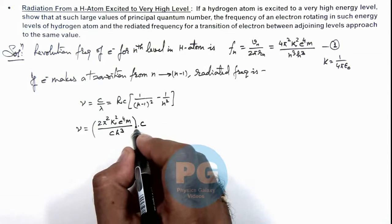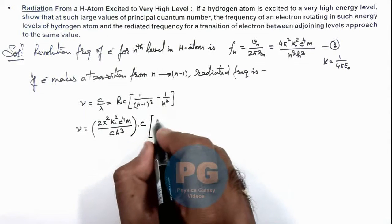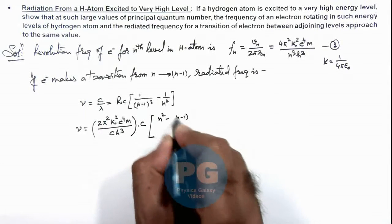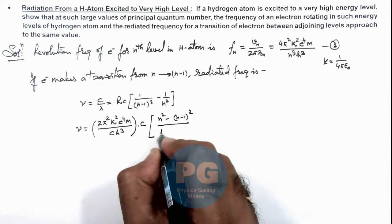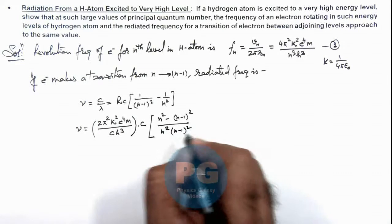And here again for very high values of n, we can take 2n-1 to be approximated as 2n. So as n very very greater than 1, we can write n-1 to be approximately n, and 2n-1 to be approximately 2n.